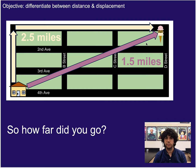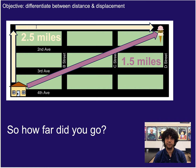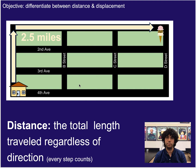So the question is, how far did you go, or how far away are you from home? It just depends on what type of distance or length you want to describe. If you wanted to focus on what your actual path was, ignoring any direction and counting every single step along the way, then it would be 2.5 miles. But if you just wanted to know how far you are from start to finish, that would be 1.5 miles.